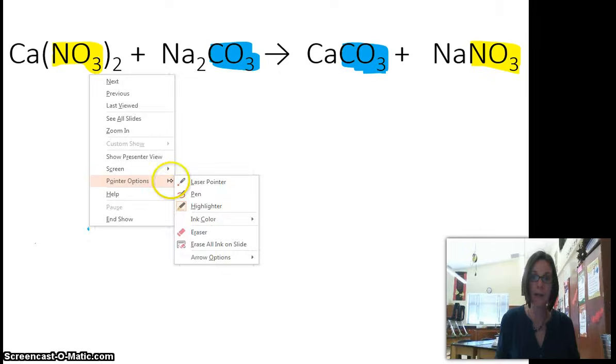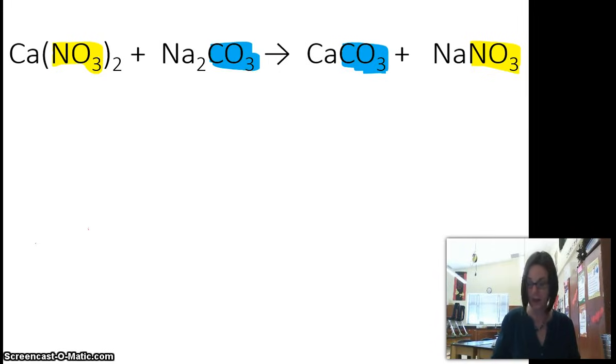So what that's going to let us do is when we list all the elements we have, I'm going to list calcium, and instead of listing nitrogen and oxygen, I'm going to list NO3. Then I'm going to list sodium and CO3. That's going to save us so much time trying to add together oxygens because they're everywhere in this reaction.